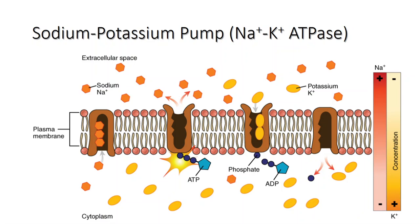The process consists of the following steps. Step one: three sodium ions in the cytosol bind to the pump protein. Step two: binding of sodium triggers the hydrolysis of ATP into ADP, a reaction that also attaches a phosphate group to the pump protein. This chemical reaction changes the shape of the pump protein, expelling the three sodium ions into the extracellular fluid.